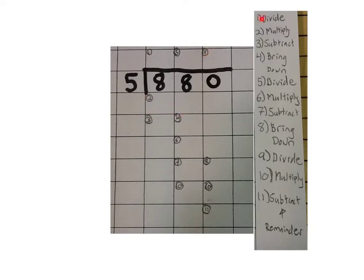On this side I have the order in which everything is supposed to be, all the steps that are supposed to be done. We have 11 in total and this one is a three-digit question without a remainder. So we have 880 divided by 5.